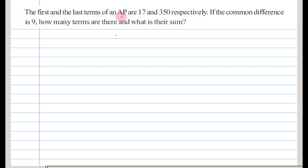The first and last terms of an AP are 17 and 350 respectively. If the common difference is 9, then how many terms are there and what is their sum?